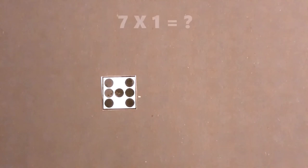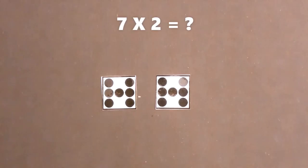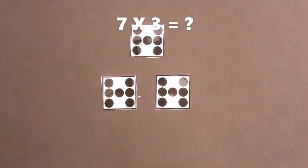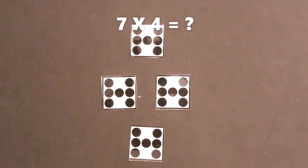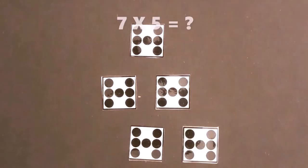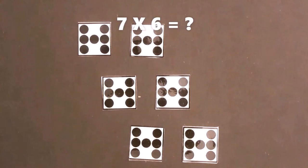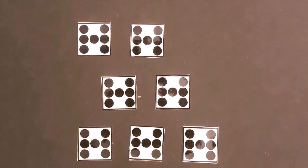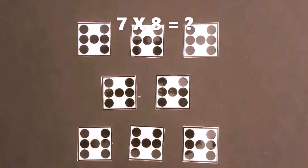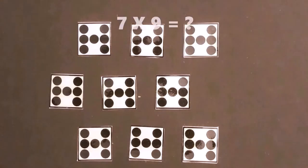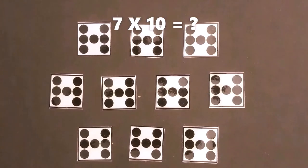Seven times one is... Seven times two is... Seven times three is... Seven times four is... Seven times five is... Seven times six is... Seven times seven is... Seven times eight is... Seven times nine is... Seven times ten is...